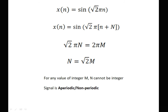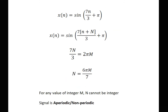Next: x(n) = sin(√2·πn). Replacing n by n + N and equating √2·πN = 2πm gives N = √2·m. Since √2 is irrational, N cannot be an integer for any integer m. Therefore the signal is aperiodic or non-periodic.